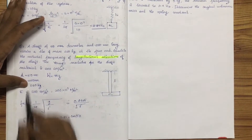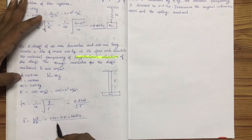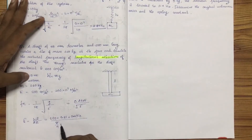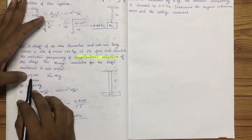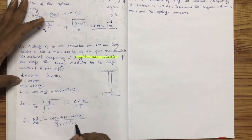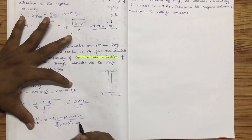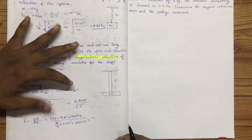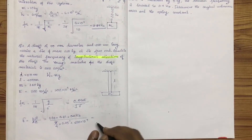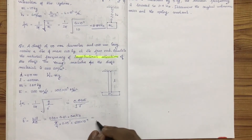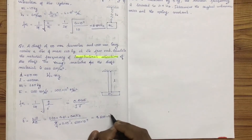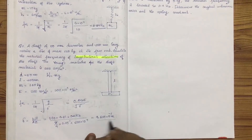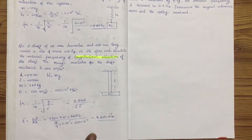L = 0.350 m = 350 × 10⁻³. Area A = π/4 × D² = π/4 × (0.05)². E = 200 × 10⁹. Calculating the delta value gives δ = 9.635 × 10⁻⁷ m. Substitute this value into fn = 0.4985 by root δ.